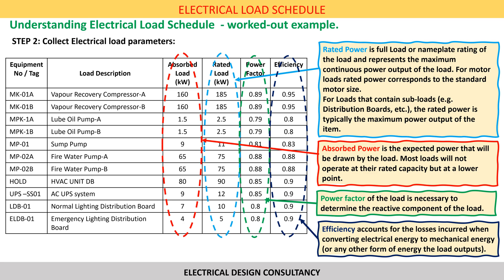Power factor of the load is necessary to determine the reactive component of the load. Efficiency accounts for the losses incurred when converting electrical energy to mechanical energy or any other form of energy the load outputs. Some of the electrical power drawn by the load is lost, usually in the form of heat to the ambient environment. Where information regarding efficiency is not available, estimates of between 0.8 to 1 can be used.